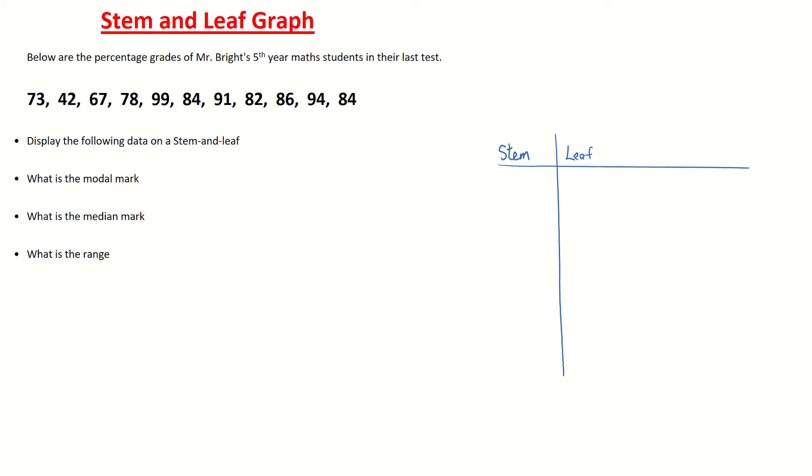Now I come back to my data and I need to rearrange the data in order starting from the smallest. That's the best practice, starting from the smallest to the largest. So I'm going to list those out now. There's the list of percentage grades listed out in order starting from the smallest 42% up to the largest 99%. Next thing I want to do is display this on our stem and leaf diagram.